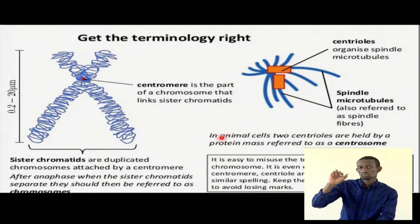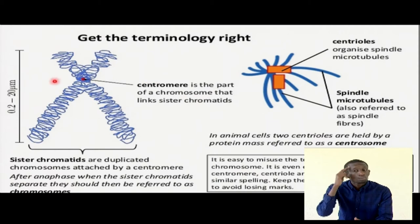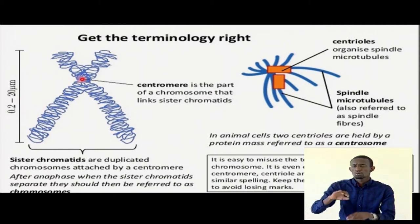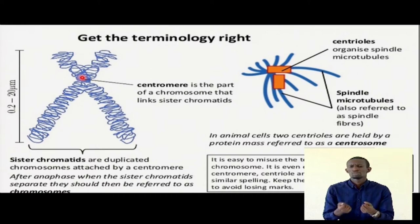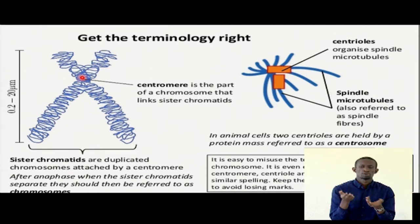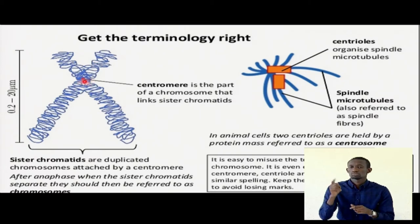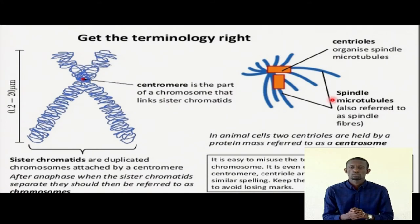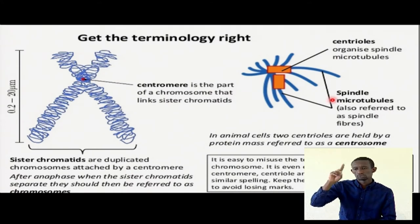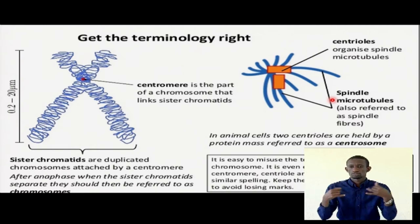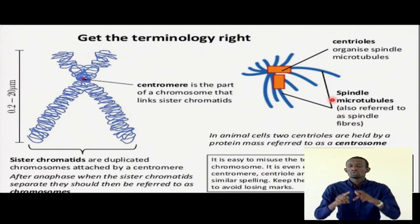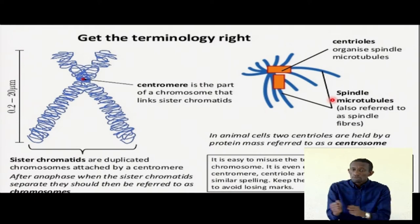Centromere, centrosome — remember that these are proteins that put the structures together. At the centromere location, we do not have very important genes. We talk of locus, loci — positions of genes. They are around the arms of the chromosome, but not at the centromere. Spindles and microtubules, also referred to as spindle fibers in cells — like the way you hang clothes on wires and they start moving as they dry.